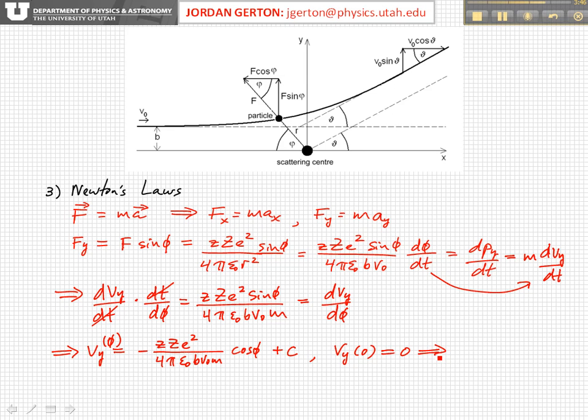And so what this means is that this is equal to 0, and so c is equal to plus little z, big Z, e squared, without the cosine, divided by 4π ε₀ b v₀ m.